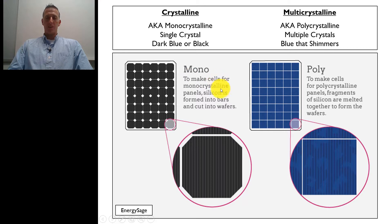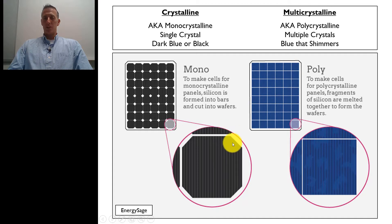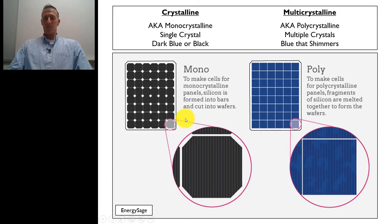To make cells for monocrystalline panels, silicon is formed into bars and cut into wafers. They have a big long ingot that they grow and then slice into very thin cells. One thing you'll notice as you look at these modules is there's kind of a diamond shape between each cell — a little open diamond area. The cell was originally round and they cut it so it fits better into the module, and that's where you see that little diamond opening.